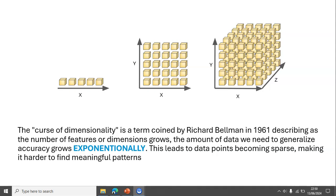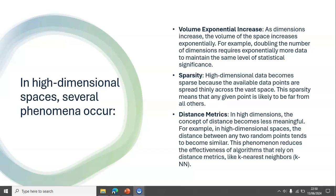As the number of features or dimensions grows, the amount of data we need to generalize accuracy grows exponentially. This leads to data points becoming sparse, making it harder to find meaningful patterns.